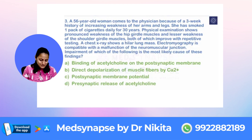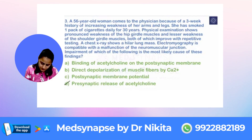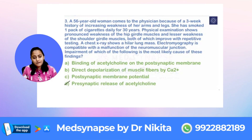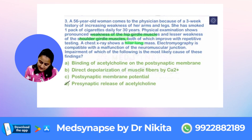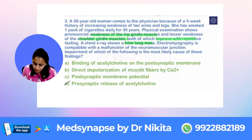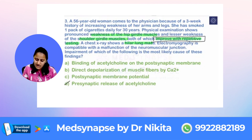The answer here is definitely going to be the pre-synaptic release of acetylcholine. What is the most important history given here? There is pronounced weakness of the hip girdle muscles, shoulder girdle muscles, and on the chest section there is a hilar lung mass. Remember that it is improving with repetitive testing — very, very important keyword here.